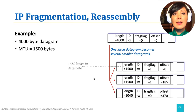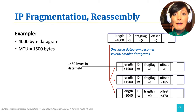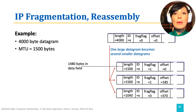The first datagram will have 1480 bytes. Together with the 20 bytes of header, this will be a total of 1500 bytes. This datagram will have the frag flag set to one, signaling that it is fragmented. It will have the offset equal to zero, and datagram length set to the new value of 1500.